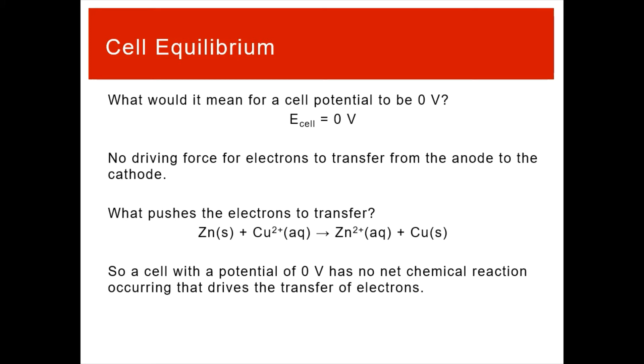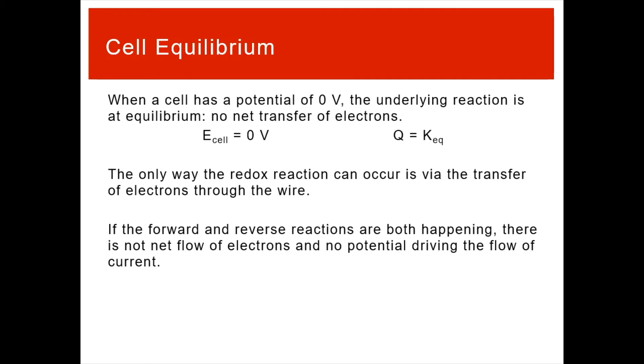So a cell with a potential of zero has no net chemical reaction happening. There is no transfer of electrons from the oxidation process into the reduction process. Instead, there's just nothing happening. There's no flow of electricity, there's no chemistry that's happening. Therefore, your electrons aren't flowing between the anode and the cathode. So if a cell has a potential of zero, that means the underlying reaction is at equilibrium. There's no net transfer of electrons. Your reactants aren't changing to become the products anymore. It just is stopped.